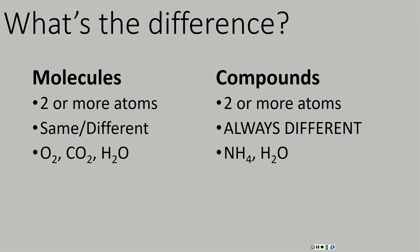Let's start talking about atoms interacting with each other and start with some terminology. First we're going to look at molecules and compounds. Molecules and compounds are very similar, and a lot of times people use them interchangeably — but that's not always correct. A molecule is two or more atoms joined together, and those atoms could be the same element or different elements. For example, two oxygens joined together — O2 — is molecular oxygen. That's a molecule.